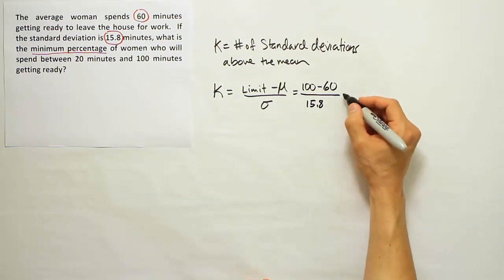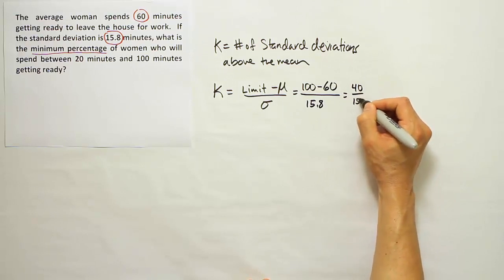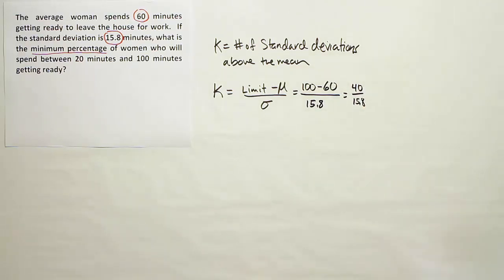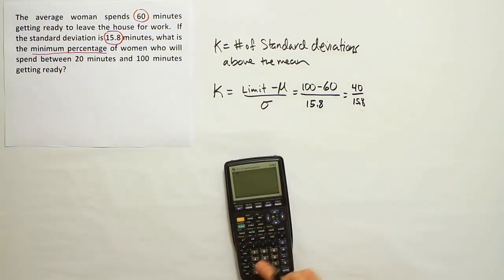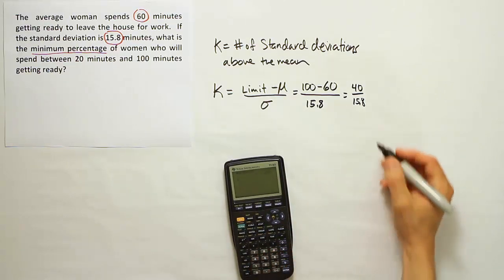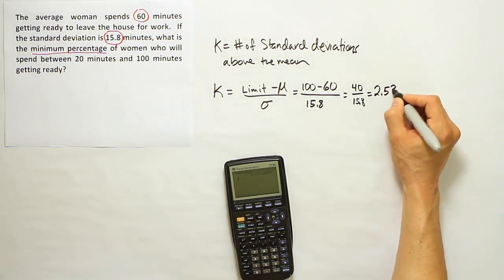So I can say 100 minus the mean of 60 divided by the standard deviation of 15.8. So again, first step, get your k. This will work out to be 40 divided by 15.8. And when I do that, I find out that the answer is 2.53.